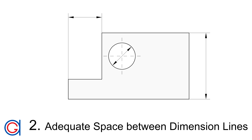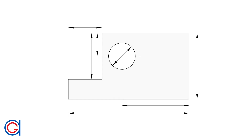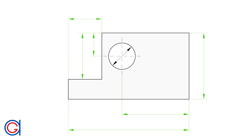Rule 2: Leave adequate space between dimension lines so that we have enough room to add in the numerical dimension. The red dimension lines on screen don't have enough space, and the green ones do, which are separated by a distance of approximately 10mm.